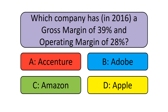These companies operate in very different industries, and there are large differences in the absolute size of their key financial numbers. So it is useful to compare them on a relative basis, by taking Gross Margin as a ratio of revenue and Operating Margin as a ratio of revenue.